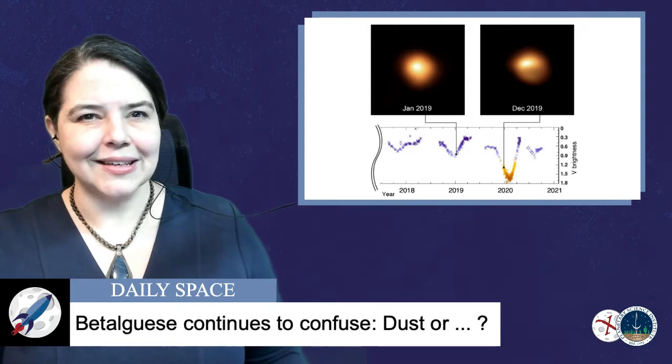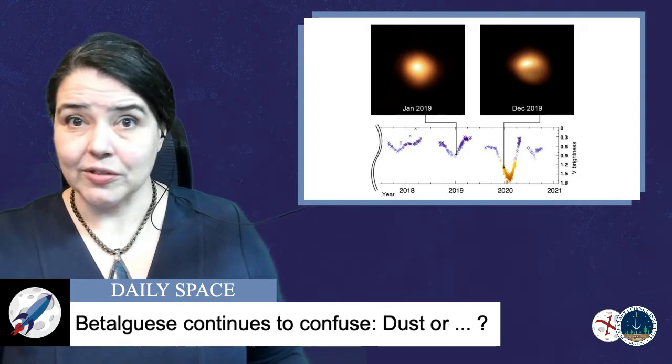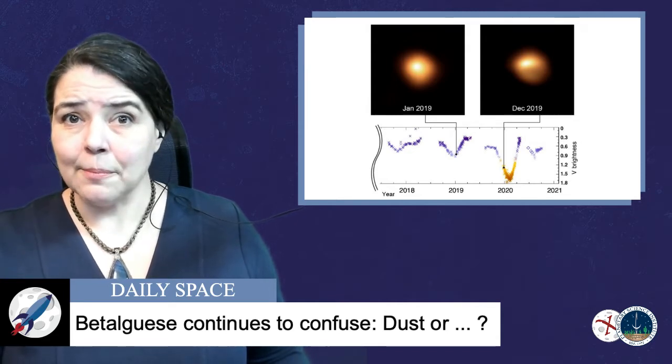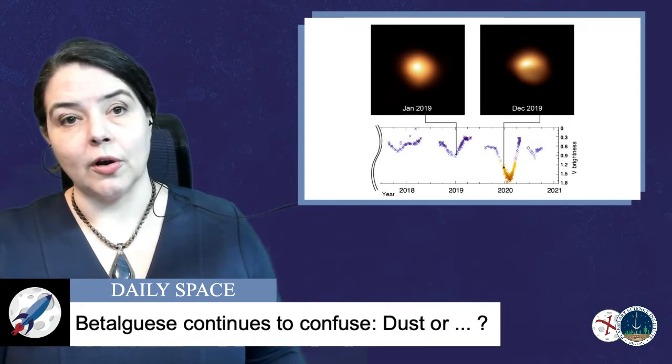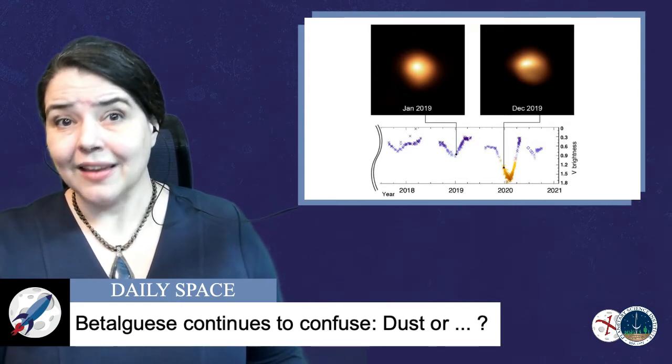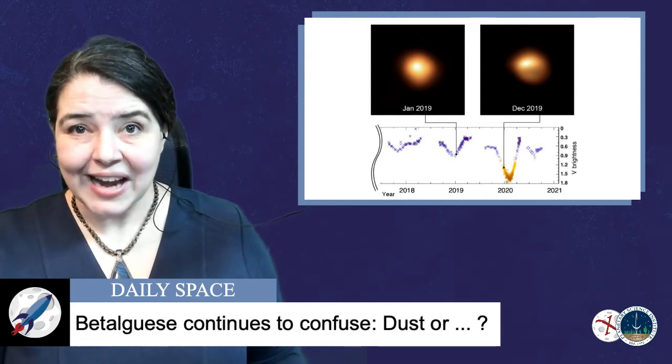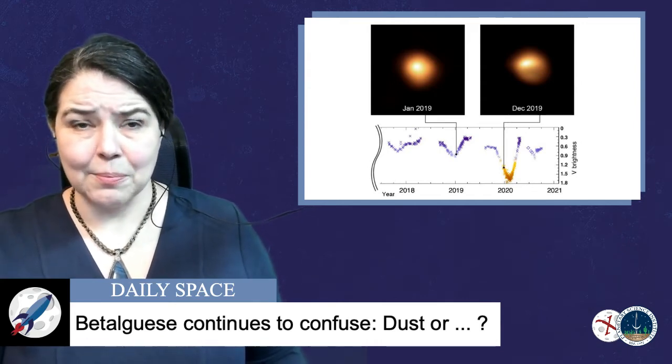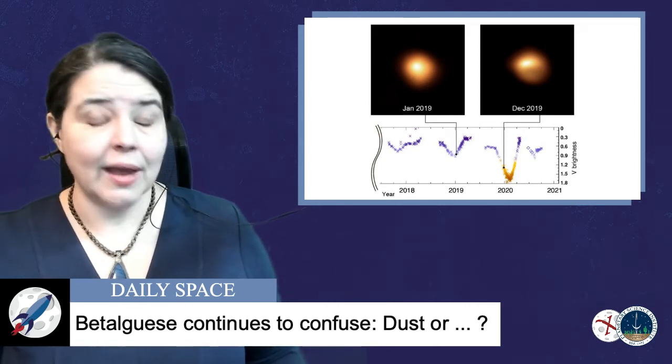While this wasn't expected to make Betelgeuse as faint as we saw, and we certainly hadn't seen it before do this, these combined motions could have led to a large fraction of the visible star being cooler. And the images seem to bear this out. We can see that a large fraction of Betelgeuse appears fainter. Is this the final answer? We have no idea. But this paper does one very important thing.